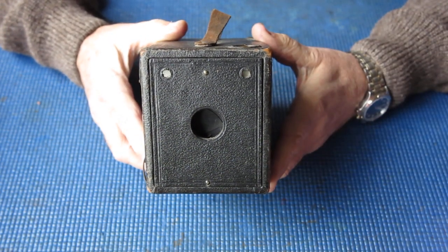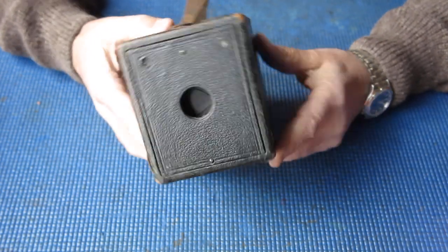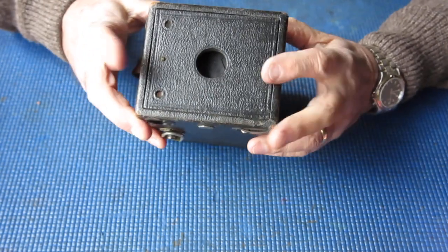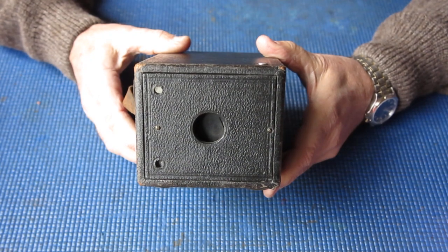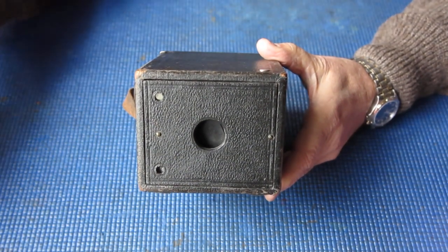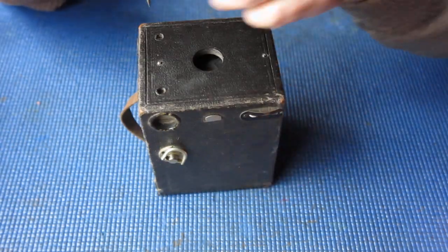So I thought you might as well see what the insides of one of these things looks like. And it looks to me like the front will come off here and expose that shutter mechanism with just two screws. So let's have a go.